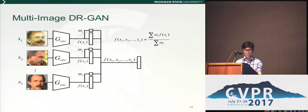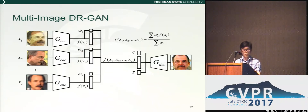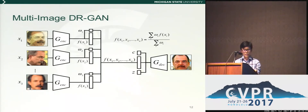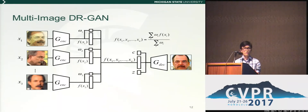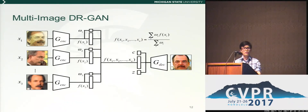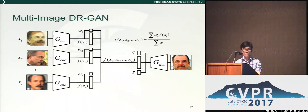The fused feature is then concatenated with the pose code and noise to synthesize the face, similar to the single-image GAN. Note that we do not have any direct supervision on omega because it is very difficult for users to specify omega for a face image.